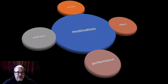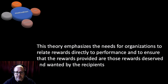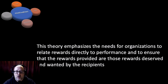Expectancy theory is all about motivation and how we begin motivating our people to do different things. The motivation aspect really falls around four different inputs: needs, effort, performance, and valence. This theory is all about emphasizing the need for organizations to relate rewards directly to performance, and to ensure that the rewards provided are those deserved and wanted by the recipients — and that's key.